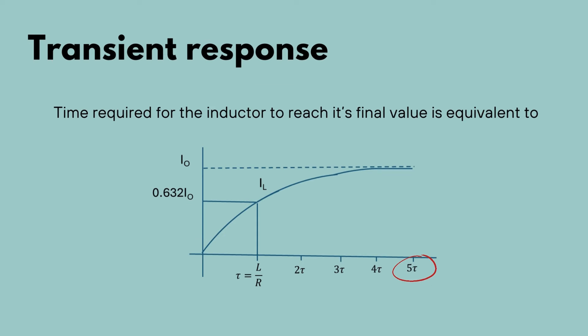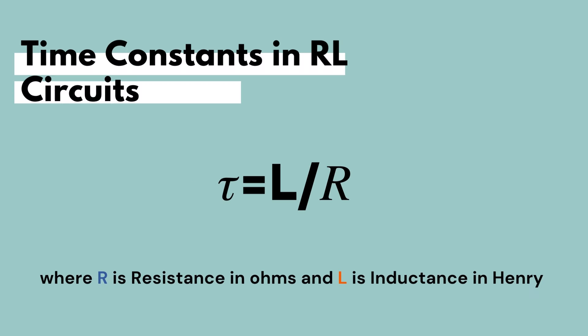The time required for current to reach its full value is equivalent to about five time constants. Thus, the transient response of a series RL circuit is equivalent to five time constants. The time constant in an RL circuit is measured by L over R, where R is the resistance in ohms, L is the inductance in henries, and the unit for the time constant is in seconds.